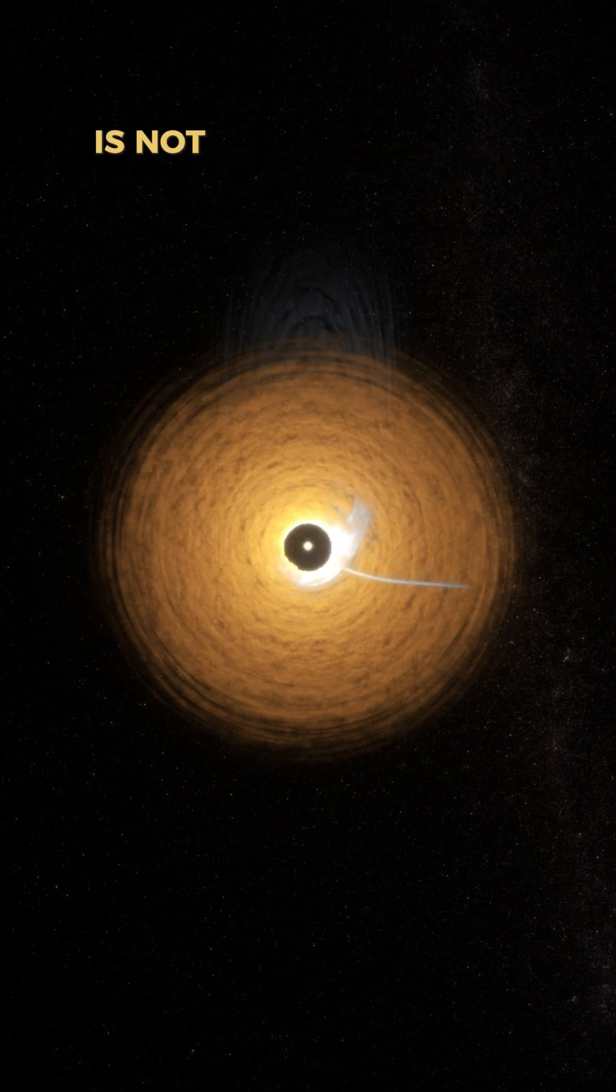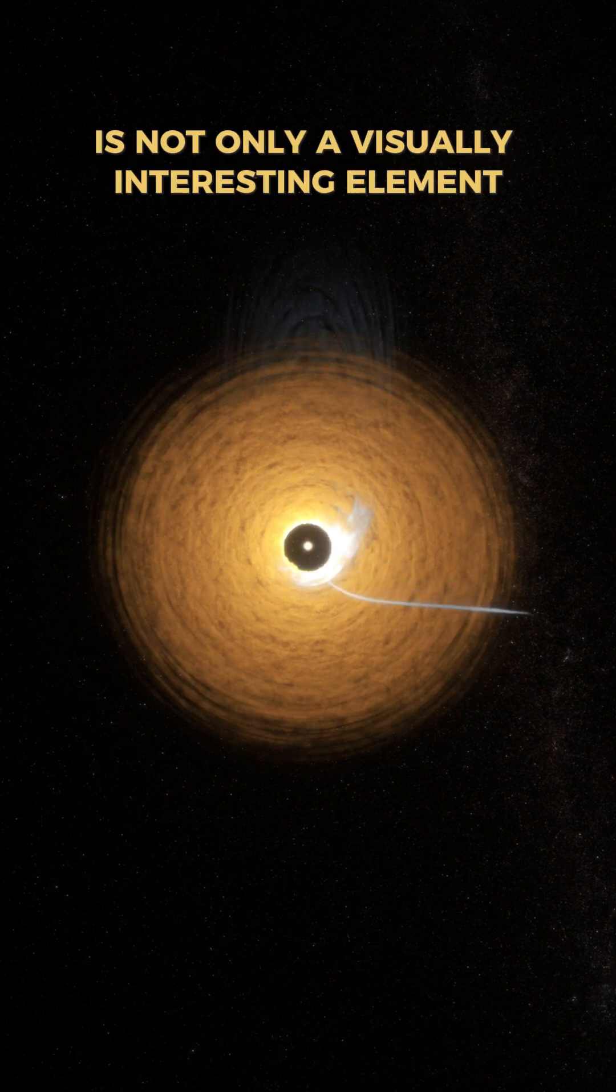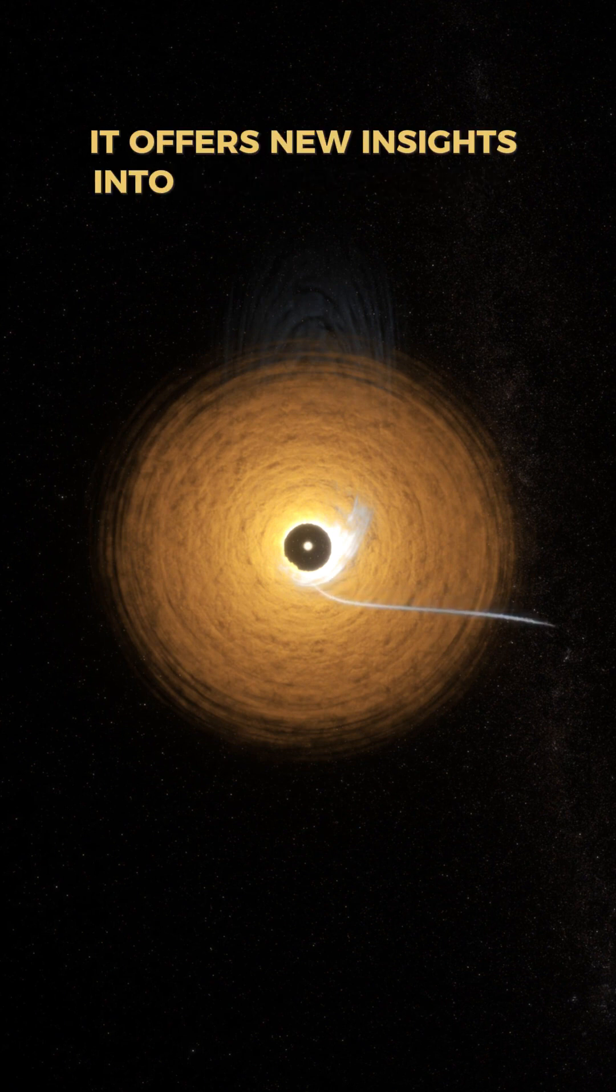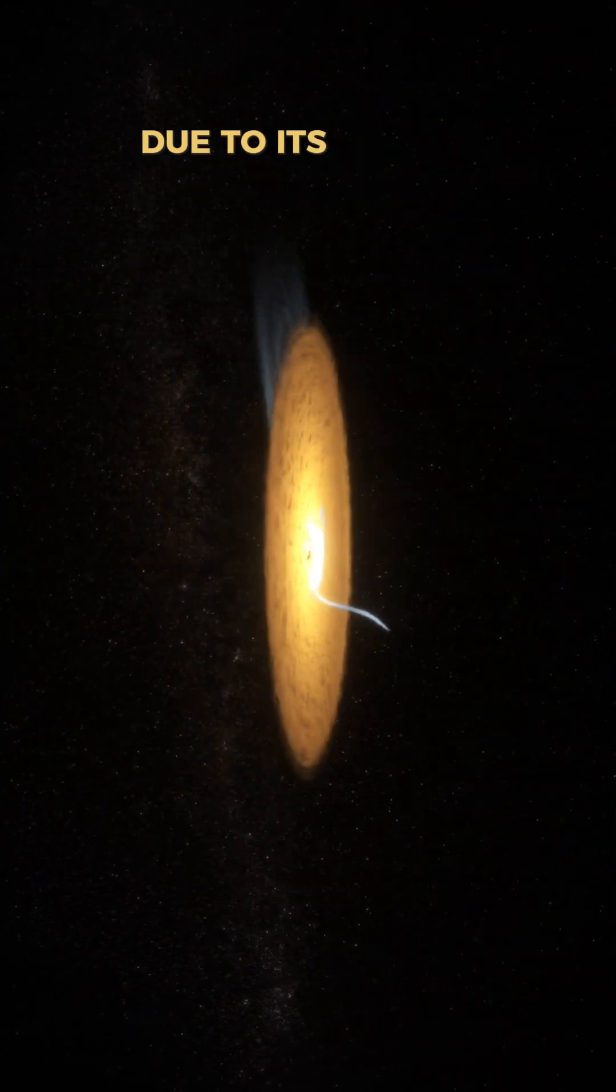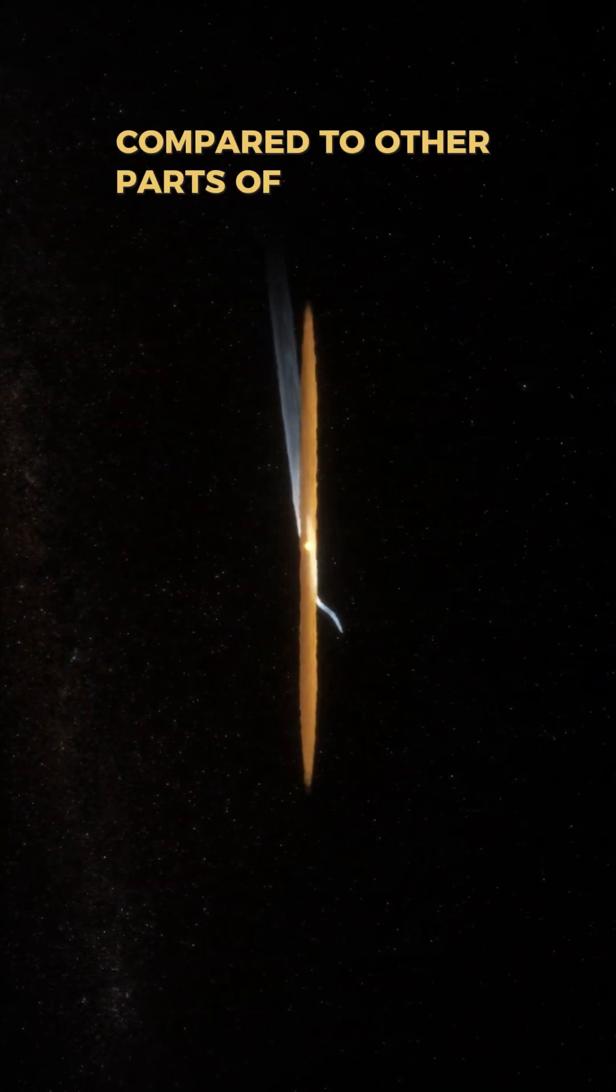The cat's tail is not only a visually interesting element, it offers new insights into cosmic processes. This structure is particularly intriguing due to its higher temperature compared to other parts of the system.